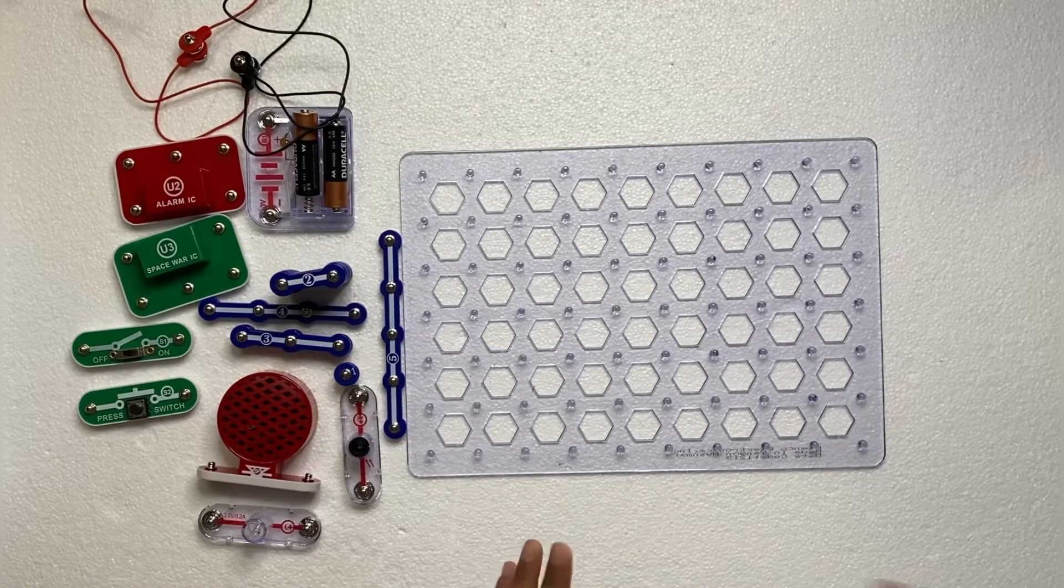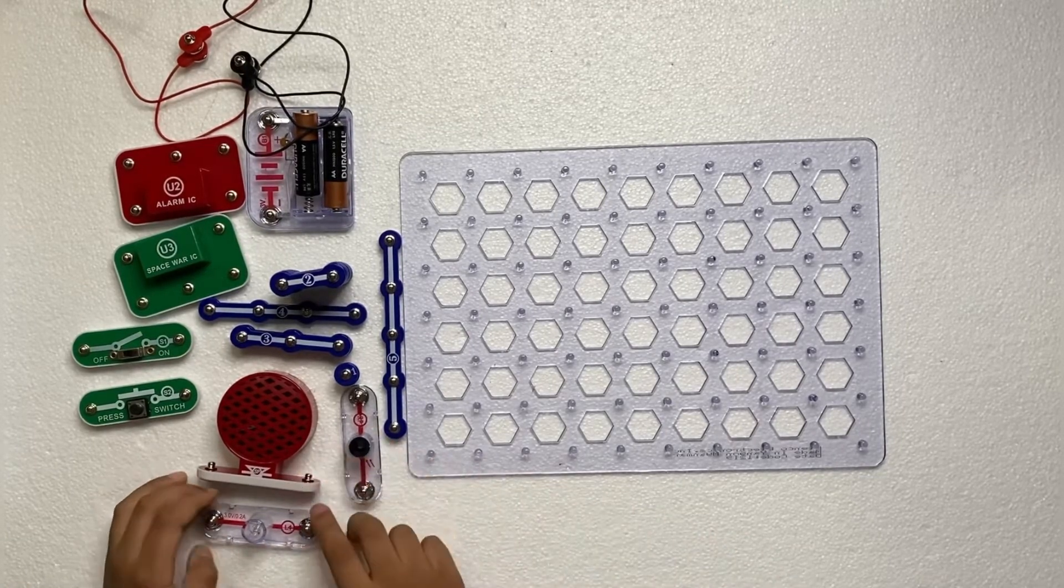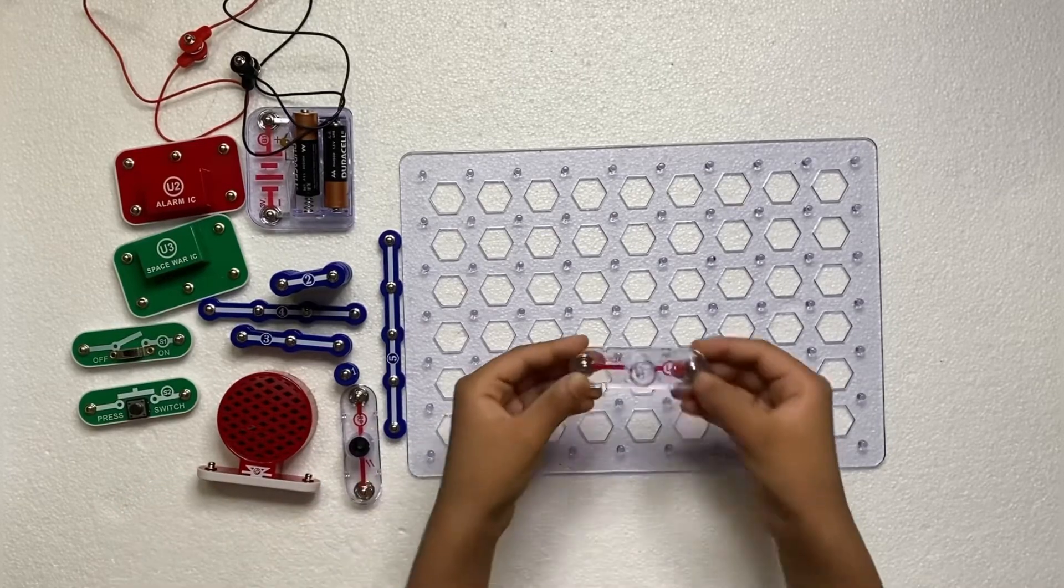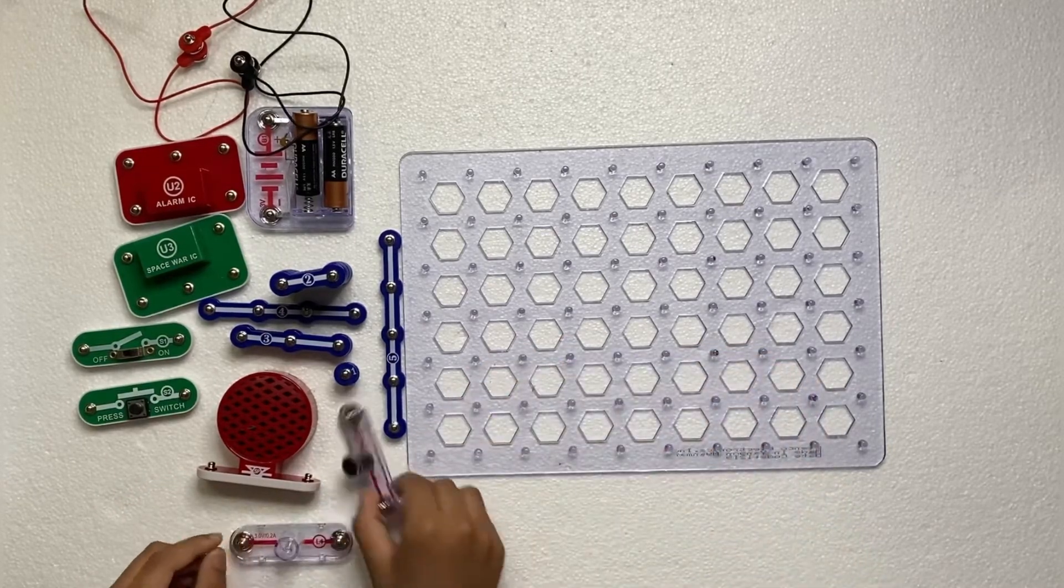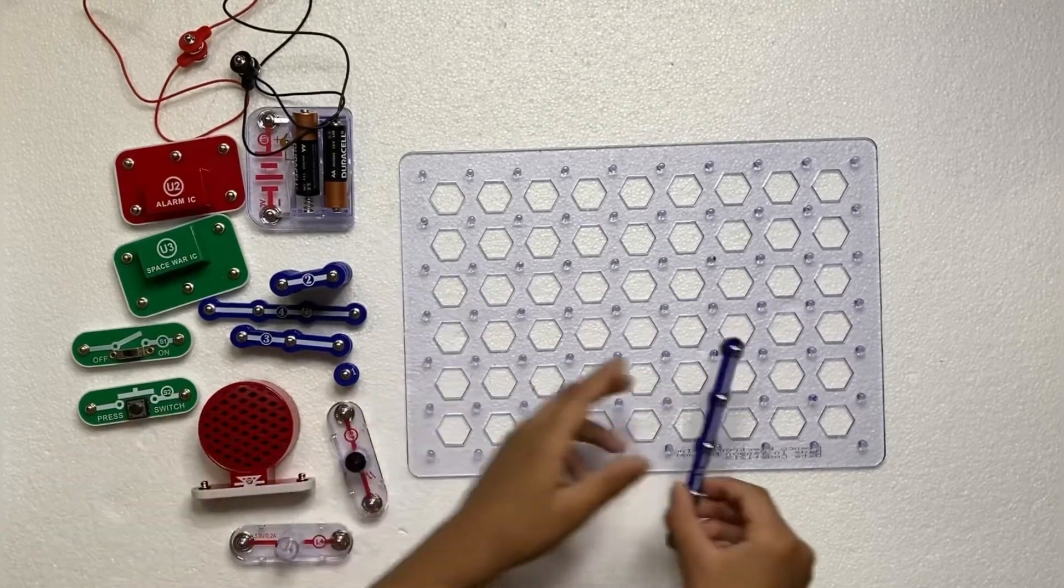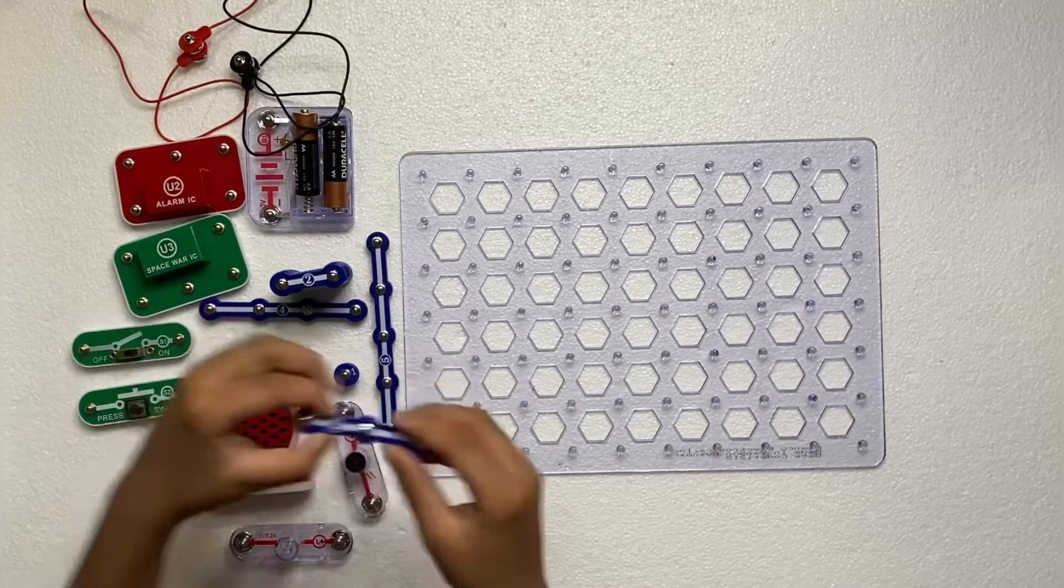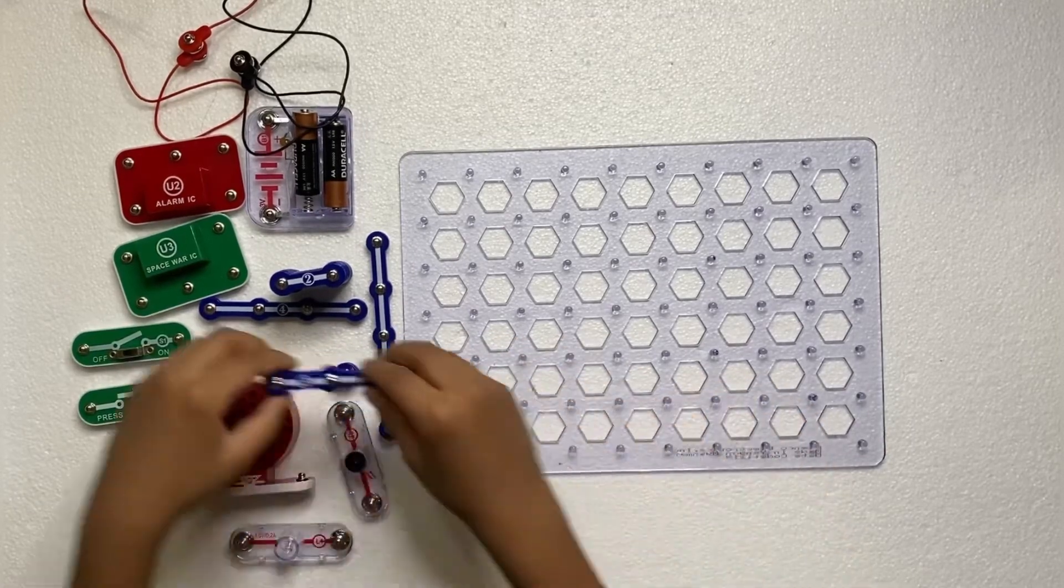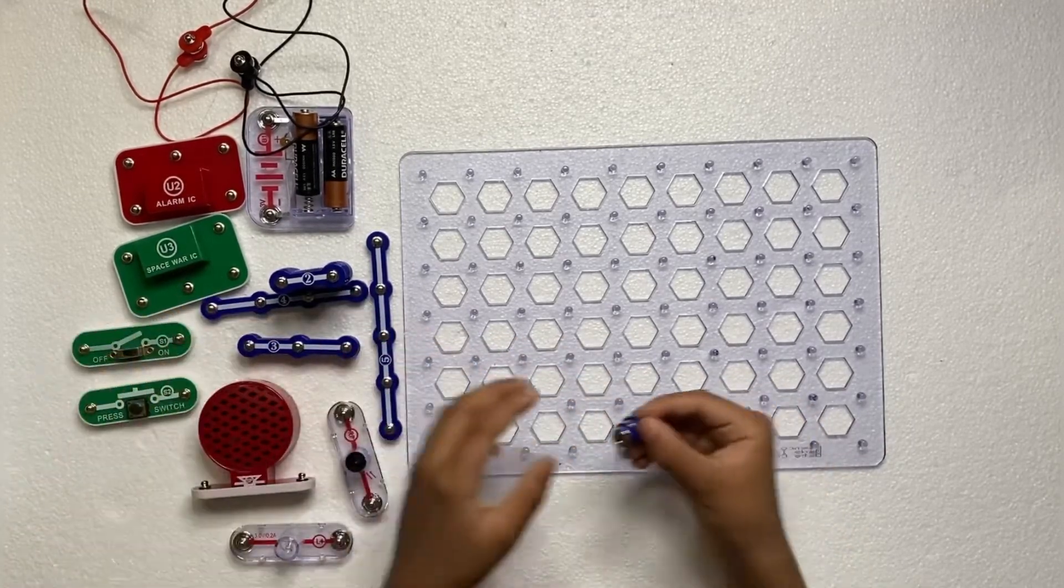So these are the pieces we are needing: lamp L1, photo resistor, speaker, snap wire 5 piece, 2 snap wire 3 pieces, 2 snap wire 1 piece.